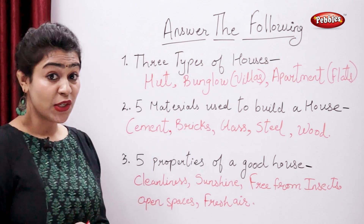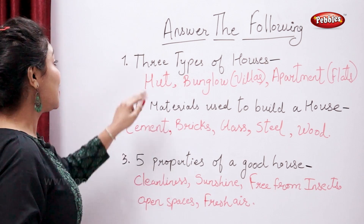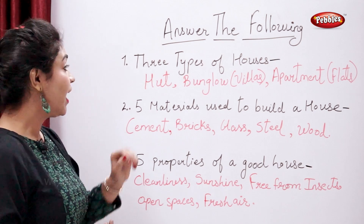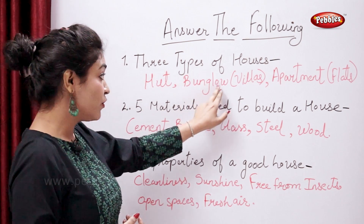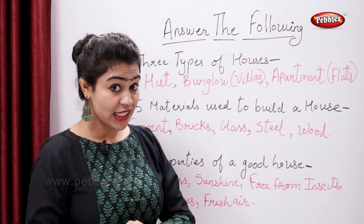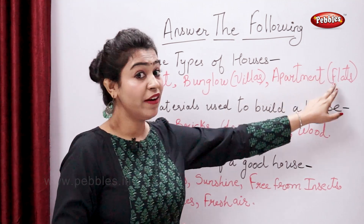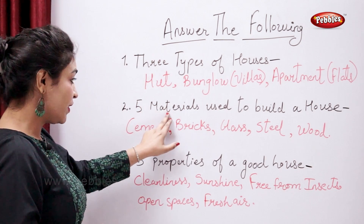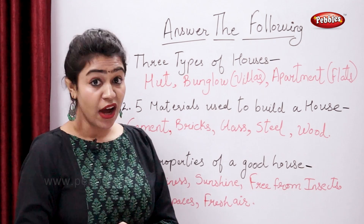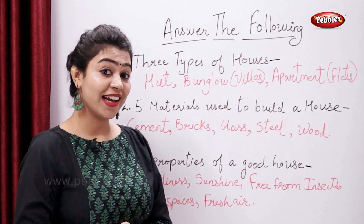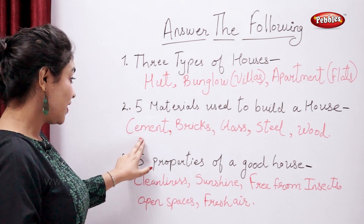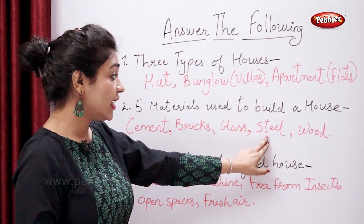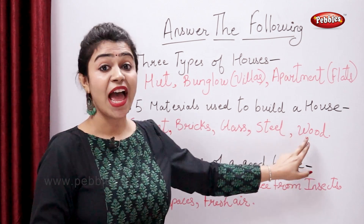So let's summarize. Three types of houses: they are hut, bungalows or villas, apartment or flats. Five materials used to build a house: they are cement, bricks, glass, steel, and wood.